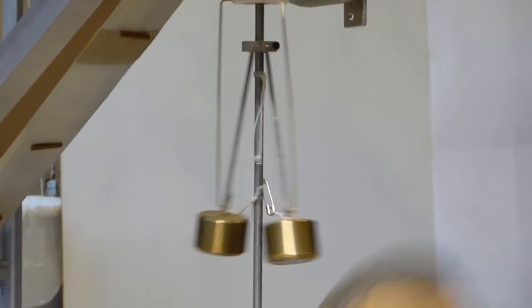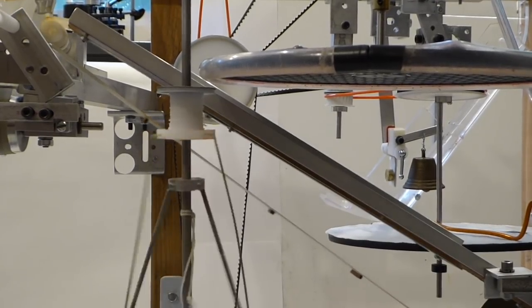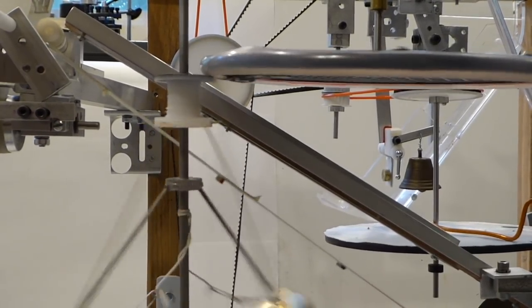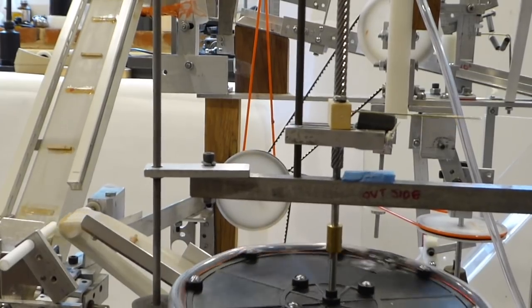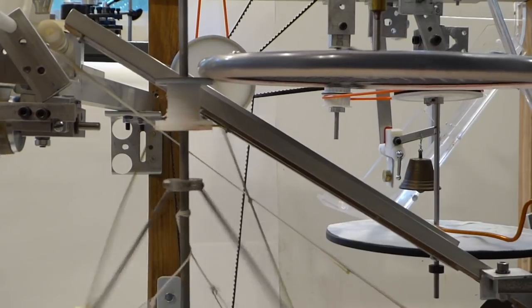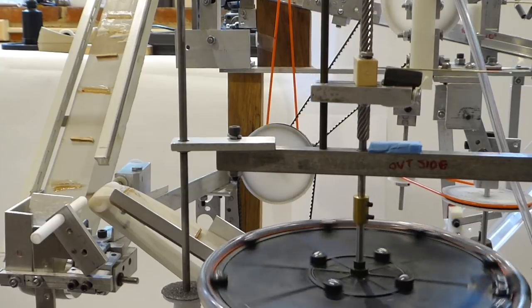As the rotating weights of the flyball governor fly out, their linkage pushes a friction disc into contact with the underside of a turntable. A lead screw attached to the turntable makes the captured nut move upwards. If I slow down, the friction disc loses contact. The turntable reverses direction.